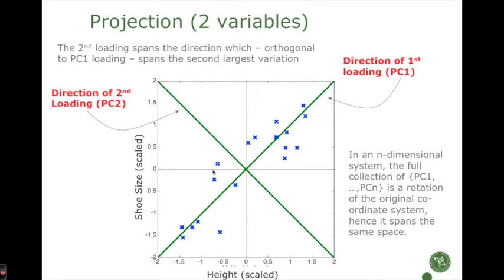When we have found the first direction in data, we can go on and calculate more components. The idea is that we put in the direction that describes the remaining part of the data after removing the first component, and that would be this direction.